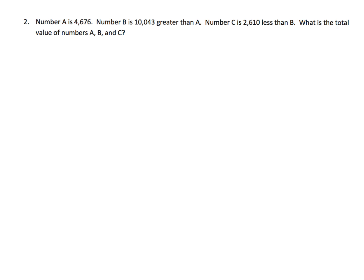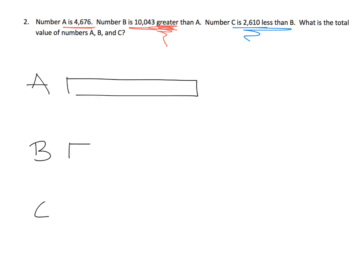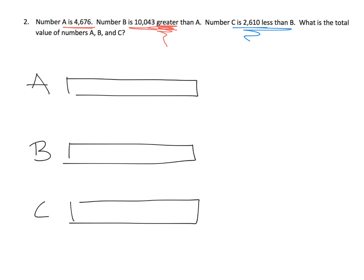So in this problem, number A is 4,676. Number B is 10,043 greater than A — that's the kicker. And then number C is 2,610 less than B. What is the total value of numbers A, B, and C? So I'm going to begin with three characters — A, B, and C — and start off with all three tape diagrams being the exact same length. Now I'm going to go back and read the question again. Number A is 4,676 — that's pretty straightforward.